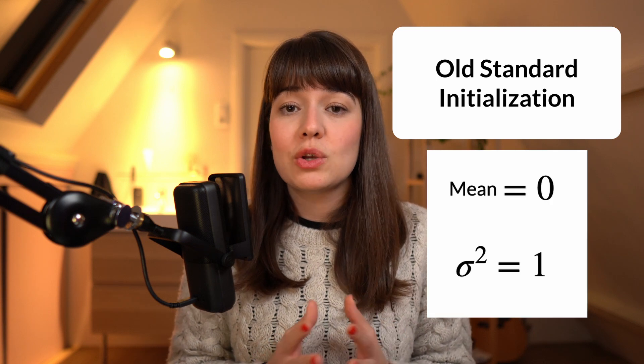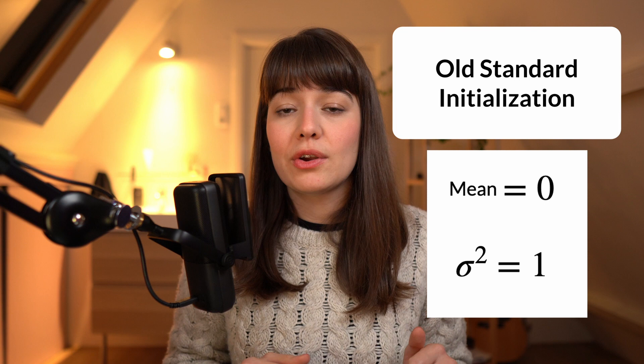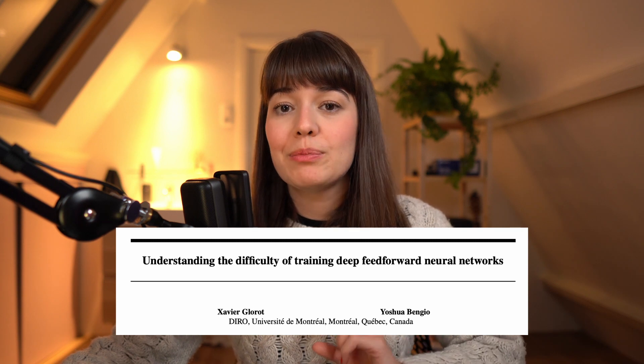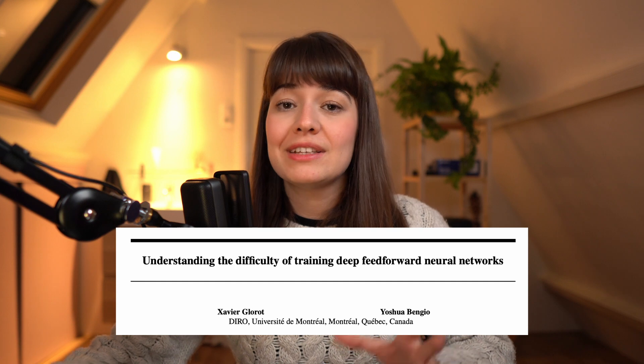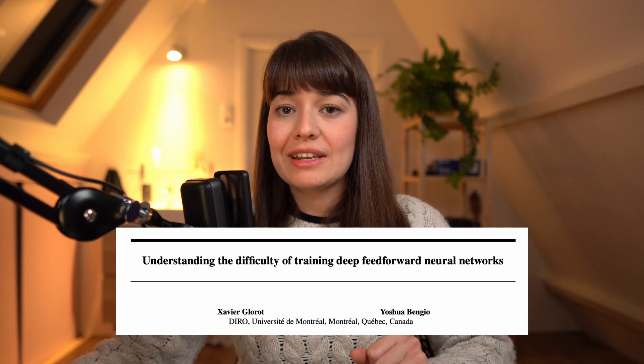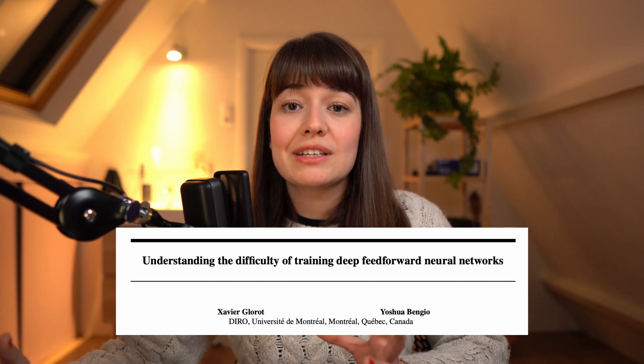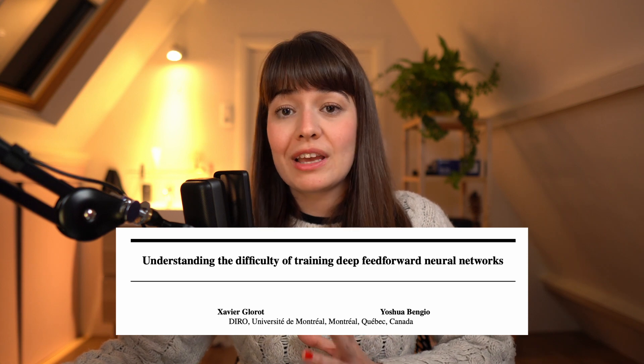Originally, what was most commonly used was to initialize the weights so that the random distribution's mean sits at zero and the standard deviation is one. But in their 2010 paper 'Understanding the Difficulty of Training Deep Neural Networks,' Yoshua Bengio and Xavier Glorot found that this weight initialization technique combined with the logistic sigmoid function might be causing the unstable gradients problem. Since then, a bunch of new weight initialization techniques have been proposed.